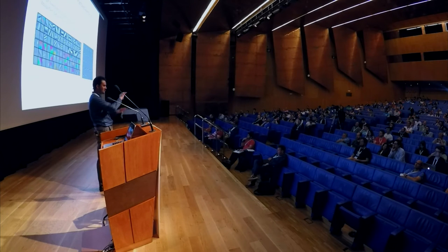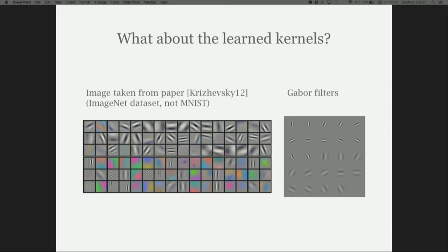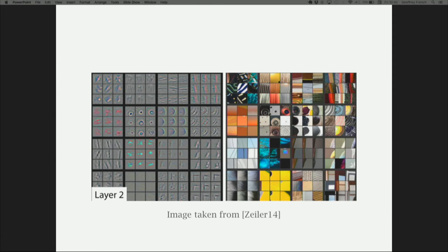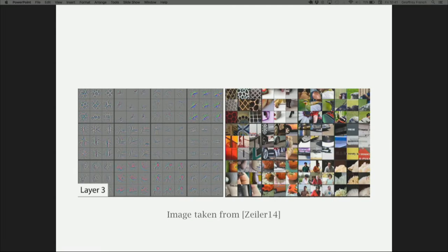What about the learned kernels? It's interesting to think about what feature detectors the network picks up. Looking at a big dataset like ImageNet — this is from the Krizhevshy paper mentioned at the beginning — you can see the kernels learned by the neural network. Compared to Gabor filters, the first layer picks up all these various edge detectors of various sizes and orientations. Zeiler and Fergus went further by visualizing how kernels respond at the second layer — slightly more complex features like square edges, curved textures, and circular features — and at layer three, somewhat more complex features that recognize simple parts of objects.